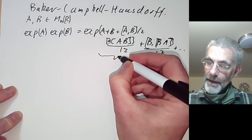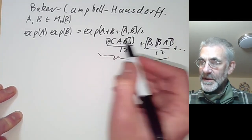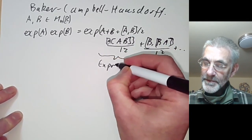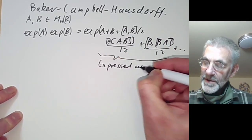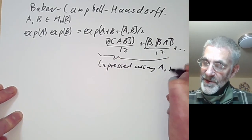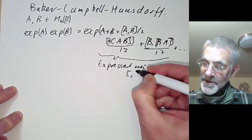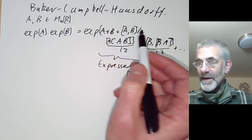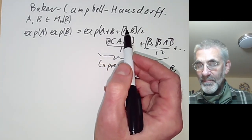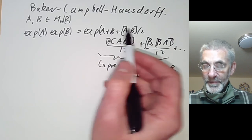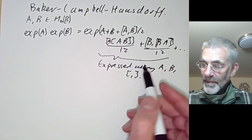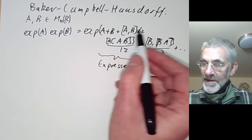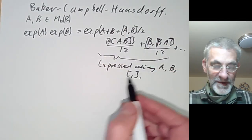What you notice is that all the terms can be expressed using the matrices A and B and just the Lie brackets. It would be trivial to write down such a formula if we were allowed to multiply matrices together. However, the key point of the Baker-Campbell-Hausdorff formula is that this expression only involves the Lie bracket.